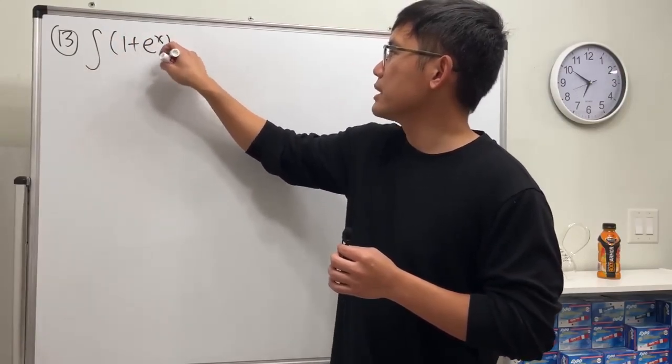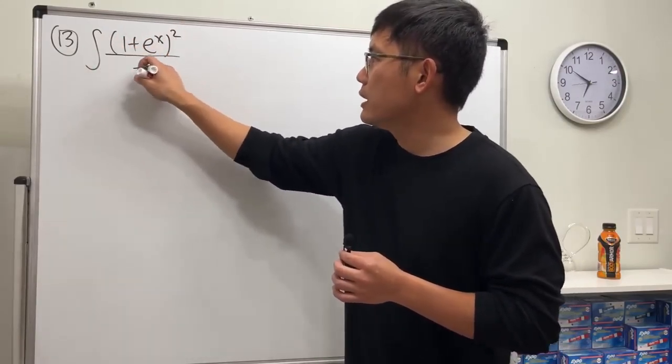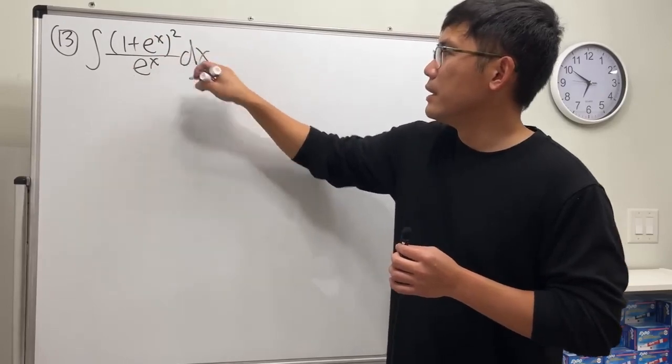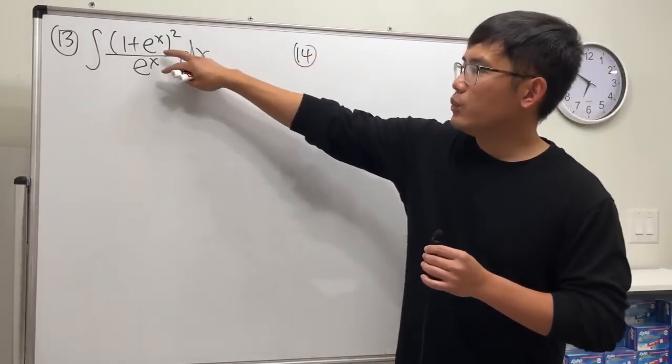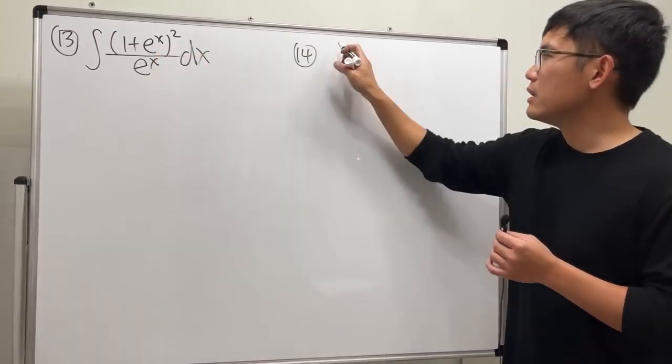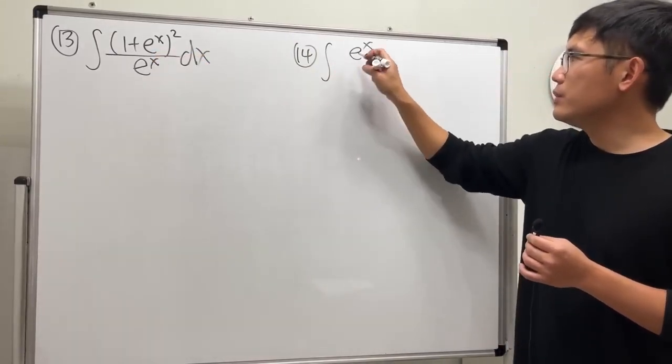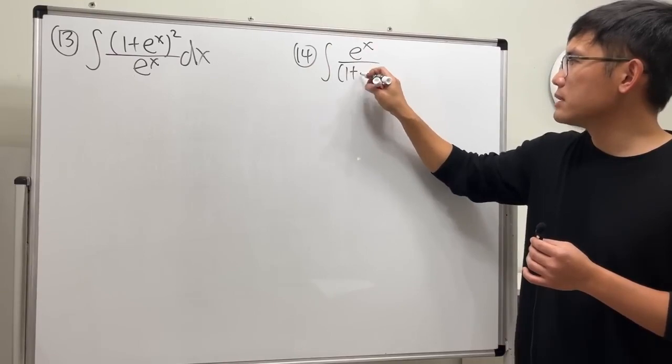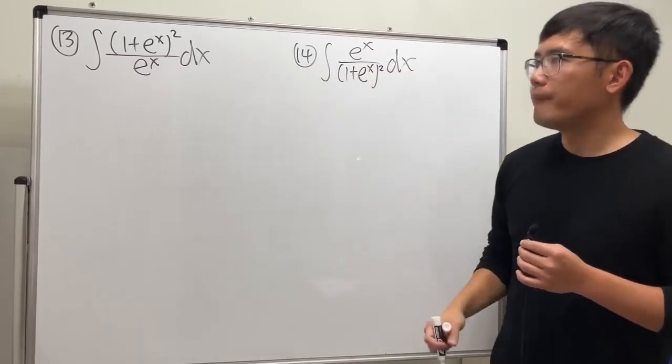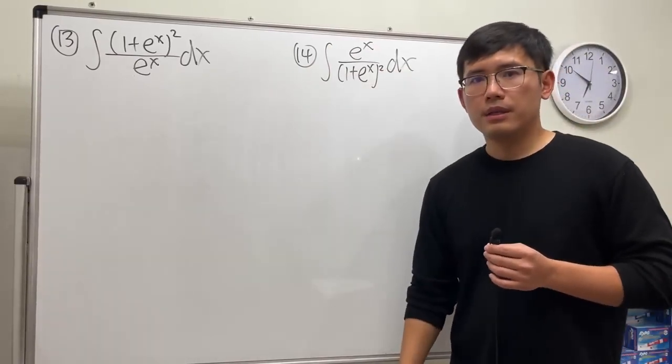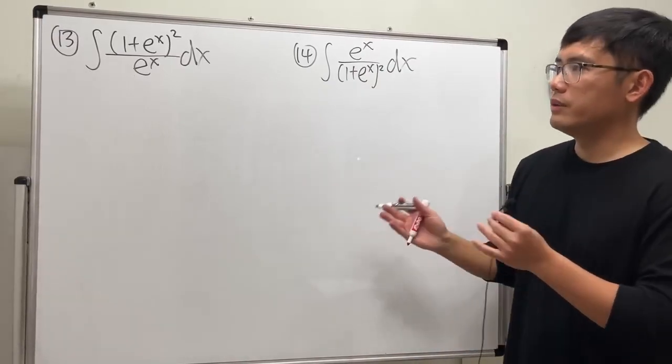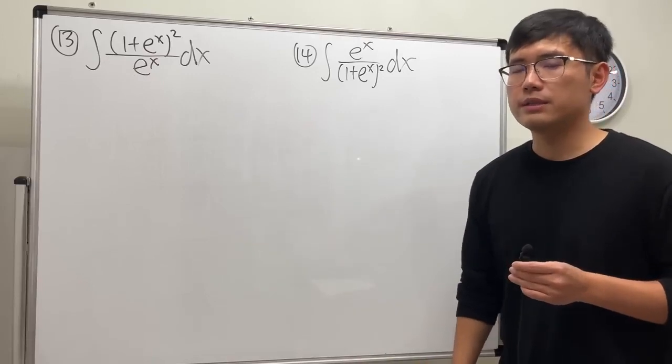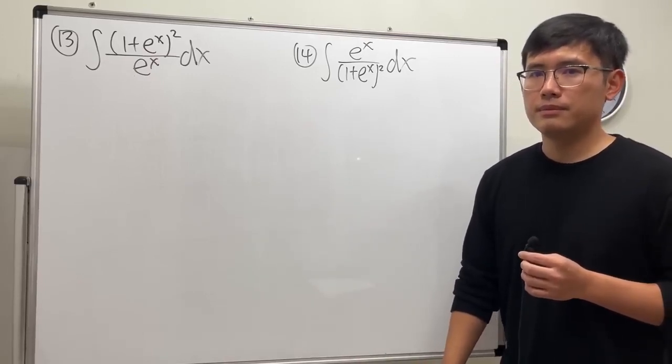1 plus e to the x squared over e to the x. On the other hand, number 14, we have the reciprocal of that: integral of e to the x over (1 plus e to the x) squared. All right, take a look. If you can choose which one of these to be done on your test, which one would you choose? I'll choose